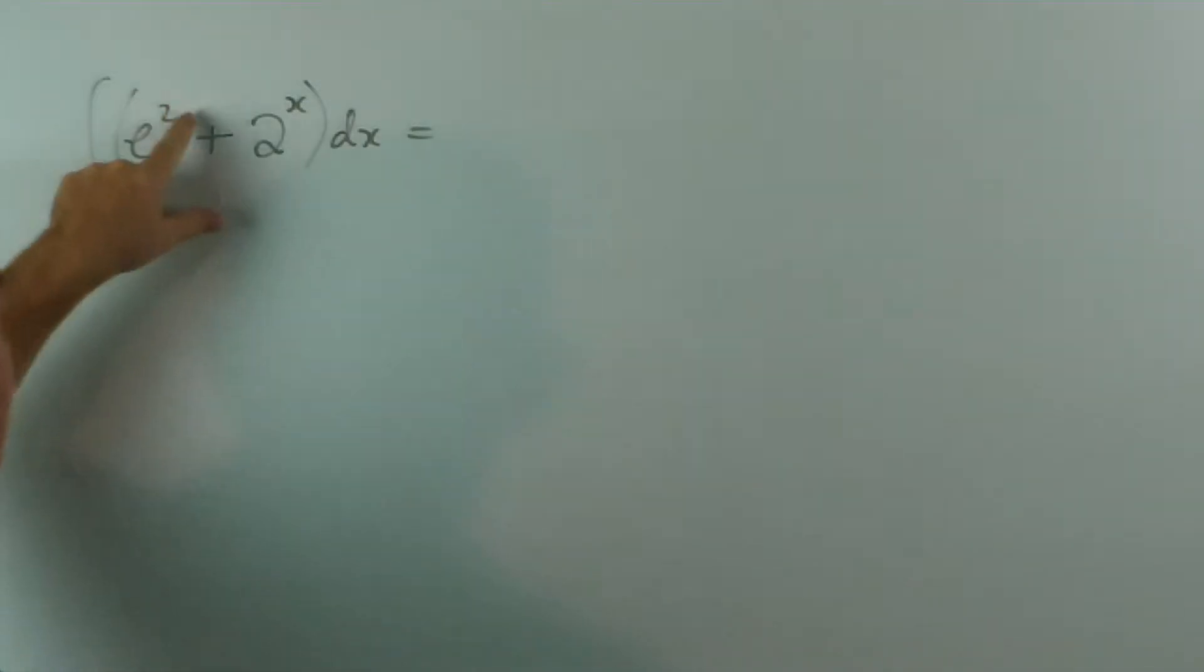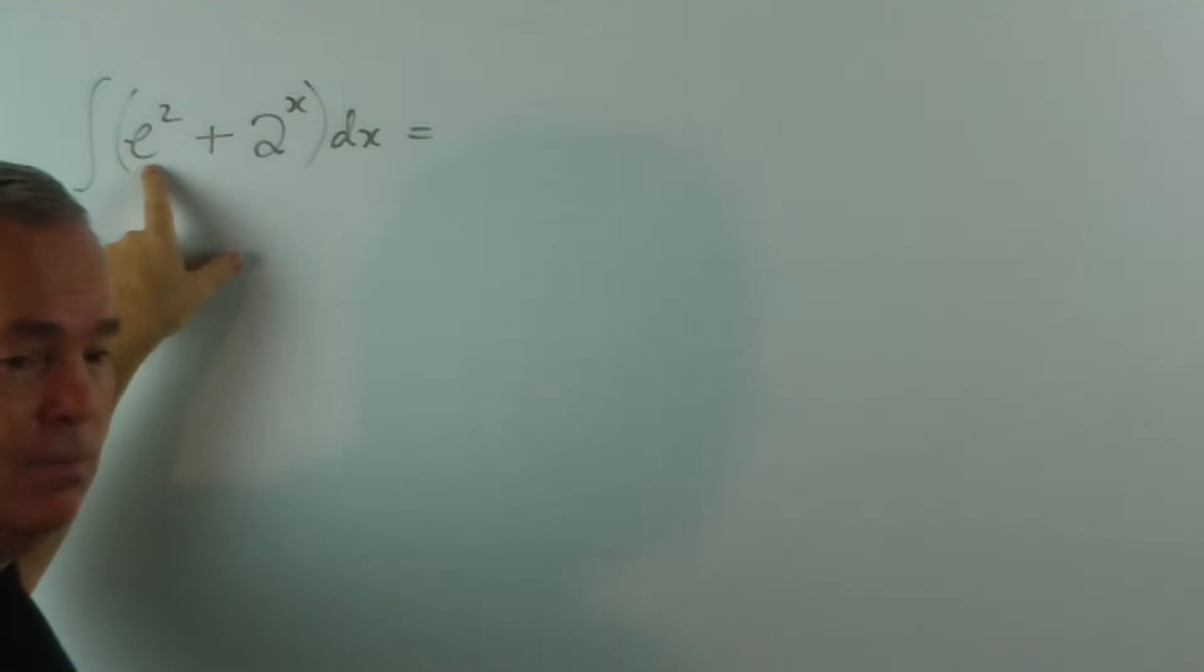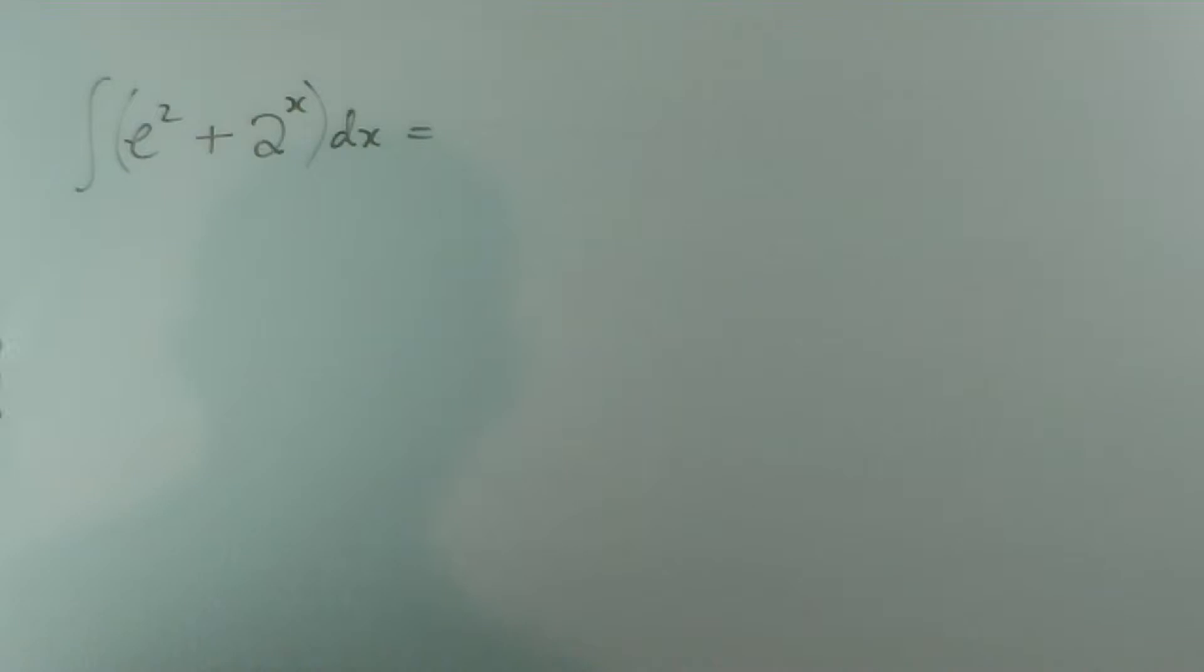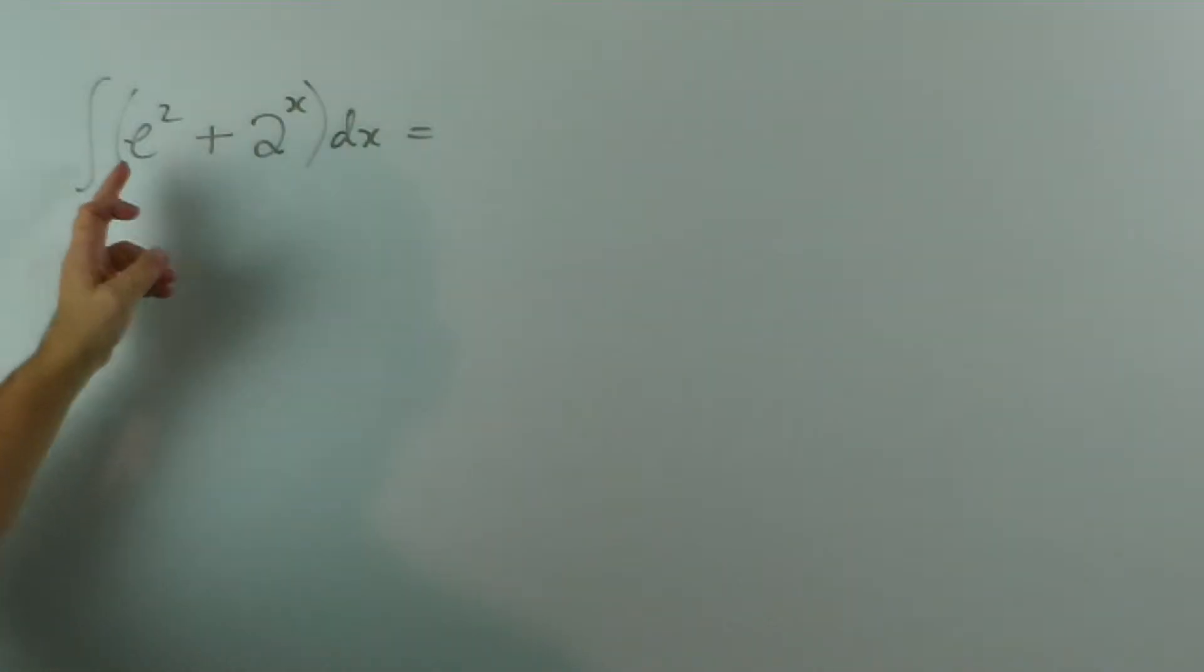And when we have e squared, we just have a number. So that could be a constant of 5 or 6 sevenths or minus 2 or something. It just happens to be e squared. But it's only a constant which makes it a very simple thing to integrate.